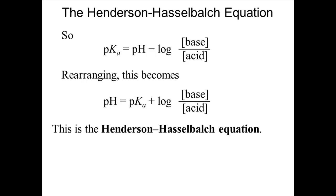This is the Henderson-Hasselbalch equation. If we add base, increasing the concentration of the conjugate base, the ratio will increase, the log will be a more positive value, and the pH will go up, meaning the solution is more basic. If we add acid, increasing the concentration of the weak acid, the ratio will decrease, the log will be more negative, and the pH will go down. A very useful point: if the concentrations of acid and conjugate base are the same, the ratio is 1, and the log of 1 is 0, so the pH equals the pKa.